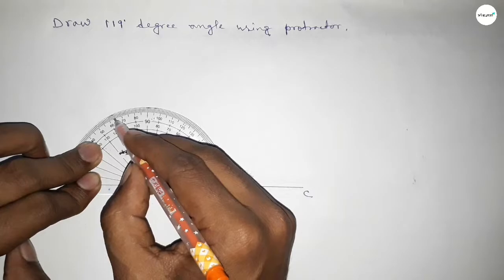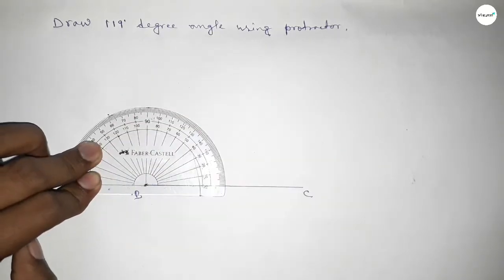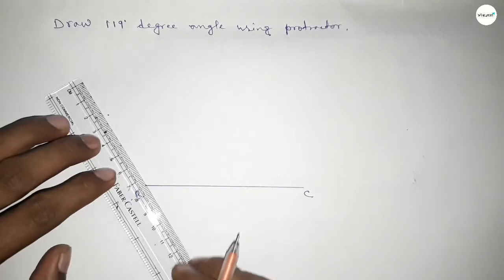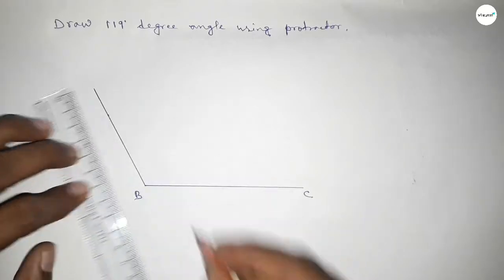Now joining this side to get 119 degree angle and taking here point A. So angle ABC up to this, so this is 119 degree angle.